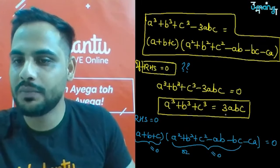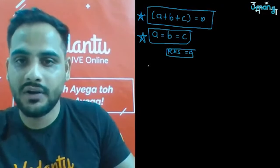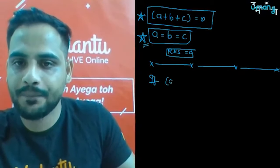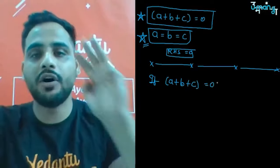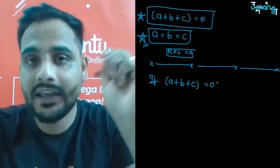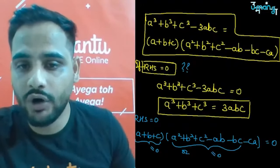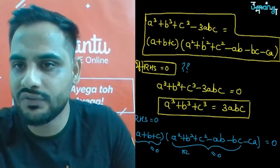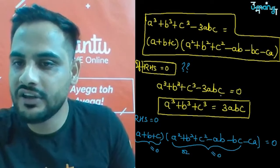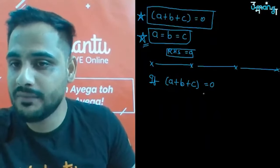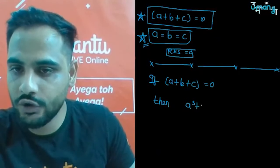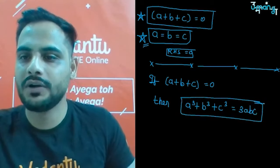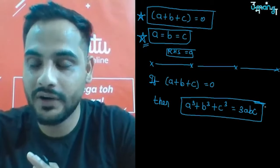This is the most important identity out of all these identities. If a+b+c = 0, then a³+b³+c³ = 3abc. For example, find (-5)³+(-4)³+9³. Take a = -5, b = -4, c = 9. Check: -5+(-4)+9 = -9+9 = 0. So a+b+c = 0, therefore the value equals 3×(-5)×(-4)×9 = 3×20×9 = 540. So easy!